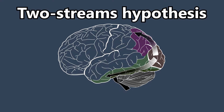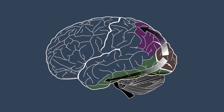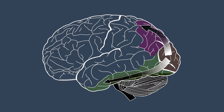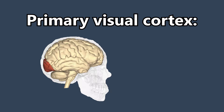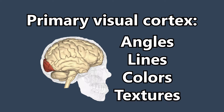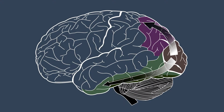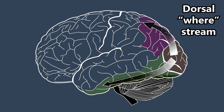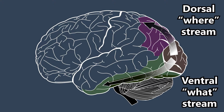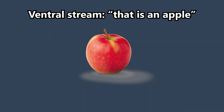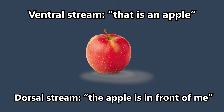The two-streams hypothesis describes how vision is processed after it gets to the occipital lobe. It's not too complicated: the primary visual cortex processes the raw image parts like angles, lines, colors, and textures. The data then gets sent either up through the dorsal stream or down through the ventral stream. The dorsal stream, also called the where stream, tells you where what you're looking at is in space relative to you. The ventral stream, or the what stream, helps you identify what you're actually looking at. So if you're looking at an apple, the ventral stream tells you that is an apple, and the dorsal stream tells you the apple is directly in front of you by about a foot.